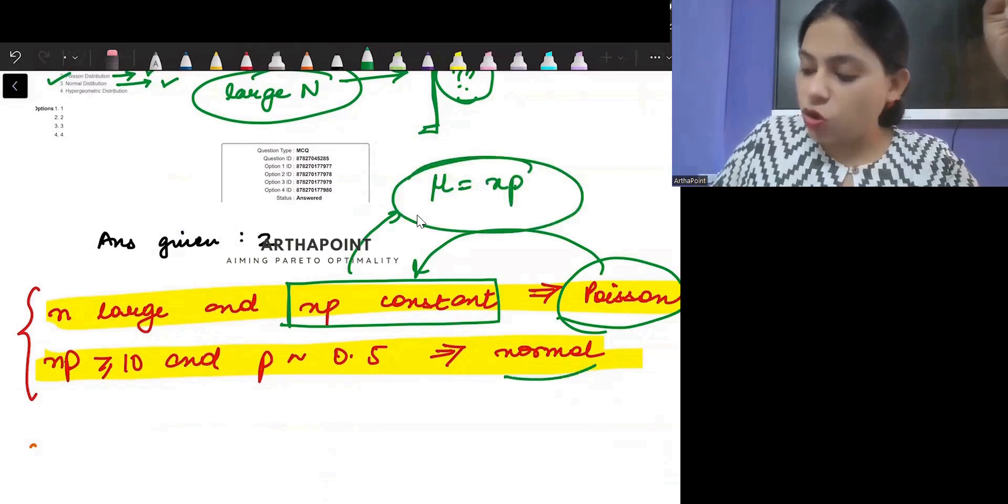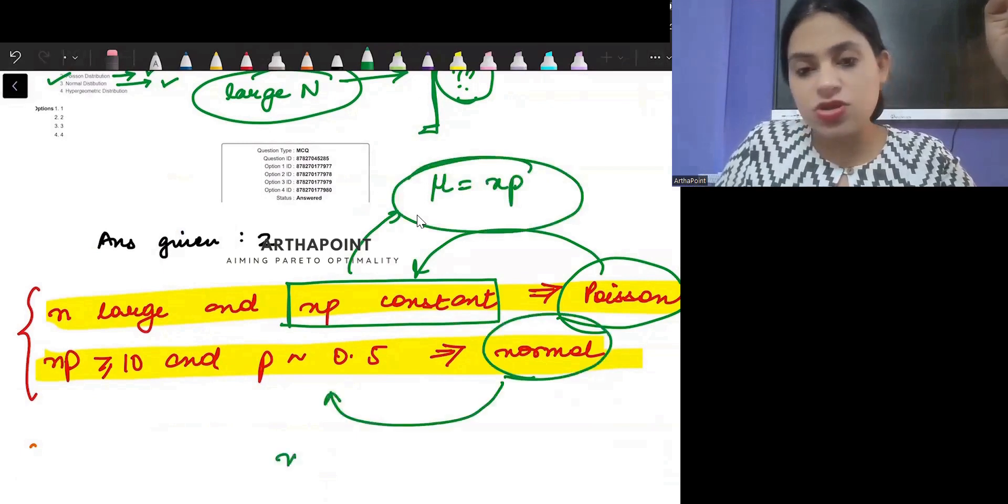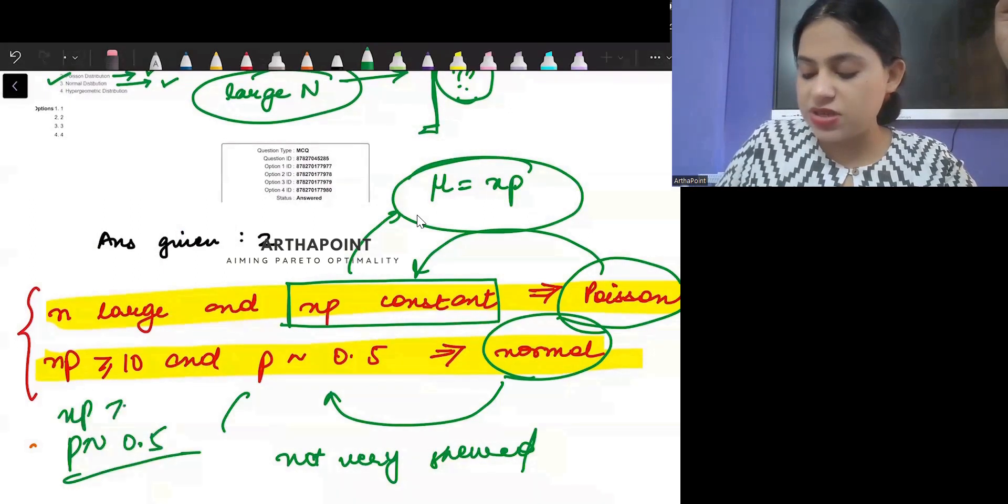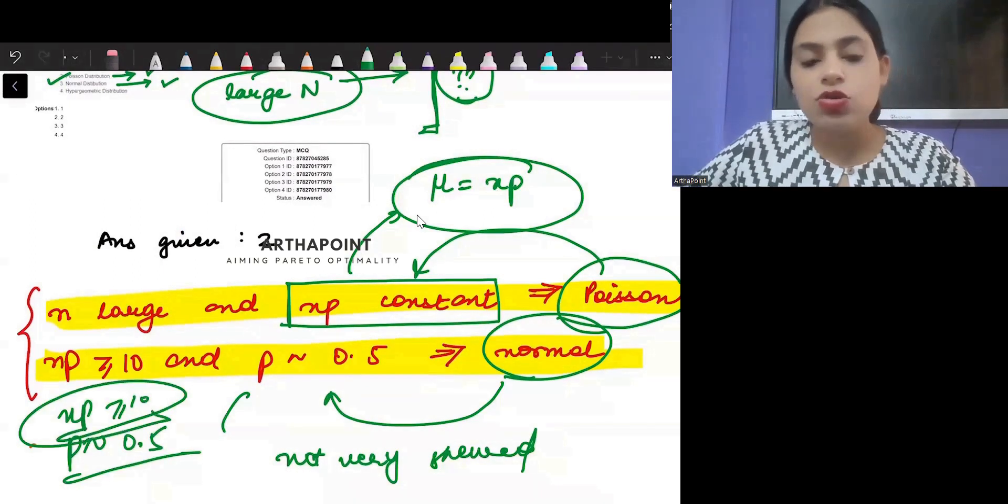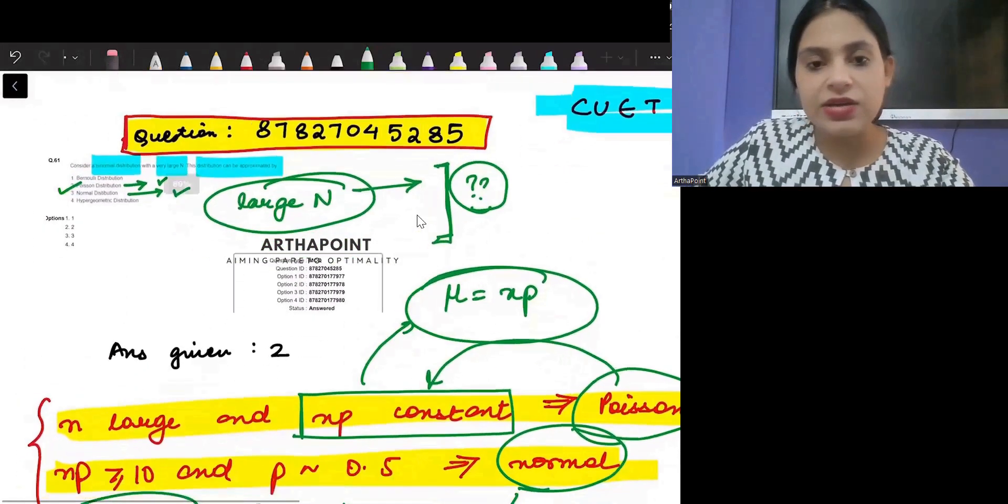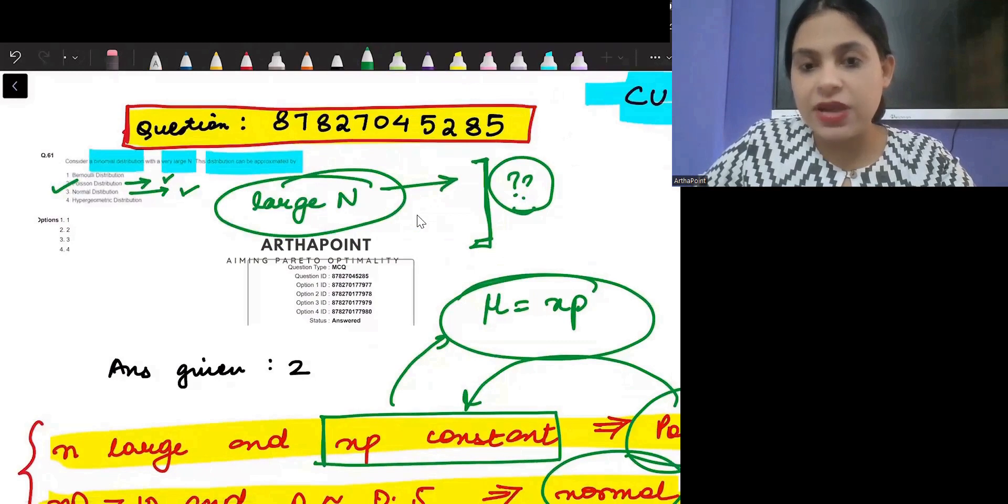And it becomes a normal distribution when the distribution is not very skewed, and P is approximately 0.5 and N into P is greater than equal to 10. So it can turn out to be a Poisson distribution as well.